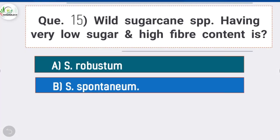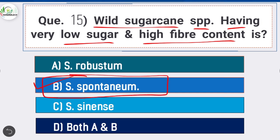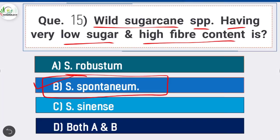Question 15: Wild sugarcane species having very low sugar and high fiber content is — option B is correct: Saccharum spontaneum. Wild species are Saccharum spontaneum (very low sugar, very high fiber content) and Saccharum robustum (very low sugar content).